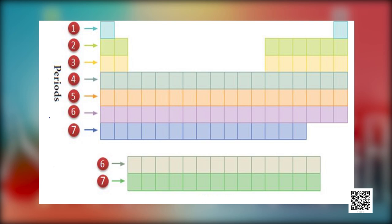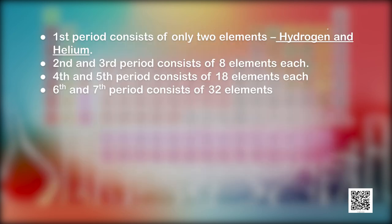There are 7 periods in the periodic table, numbered 1 through 7 from top to bottom. The 1st period consists of only 2 elements, hydrogen and helium. The 2nd and 3rd periods consist of 8 elements each. The 4th and 5th periods consist of 18 elements each. The 6th and 7th periods consist of 32 elements. In the long form of the periodic table, 14 elements of both the 6th and 7th periods are called lanthanoids and actinoids respectively, and they are placed in separate panels at the bottom.